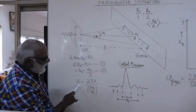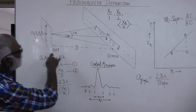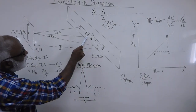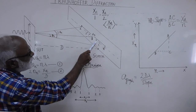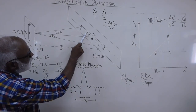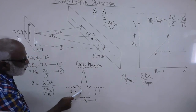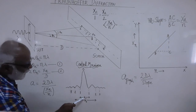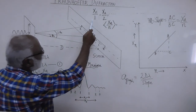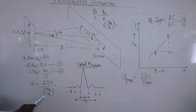We can also calculate the value of a by a graphical method. First, we measure the distance between the first minima on one side of the central maxima to the first minima on the other side, calling it x1. Similarly, the distance between the second minima on both sides is x2, and so on. After measuring x1, x2, x3 etc., we find the ratios x1/1, x2/2, x3/3, and so on. After doing this for 7 to 8 values, we calculate the average value of xn/n and substitute in the formula to calculate a.